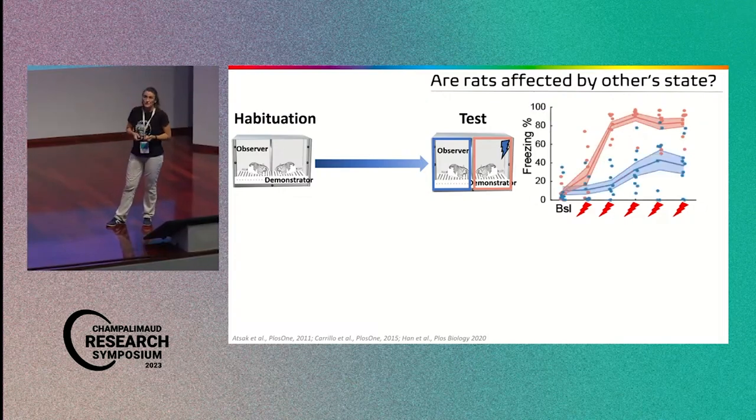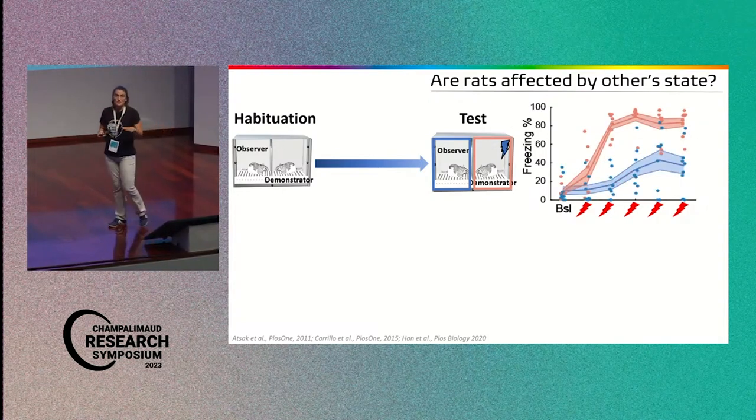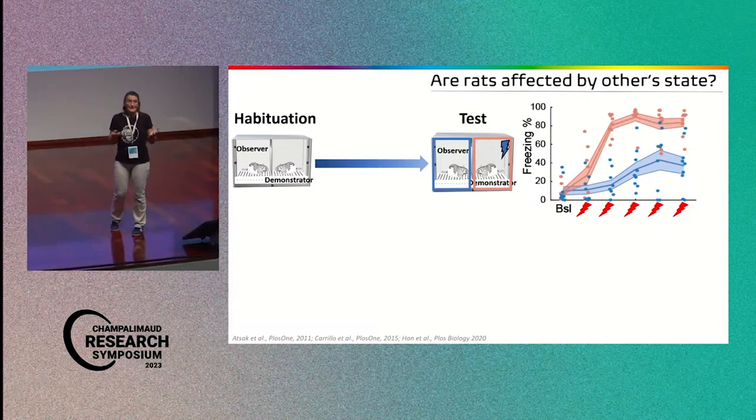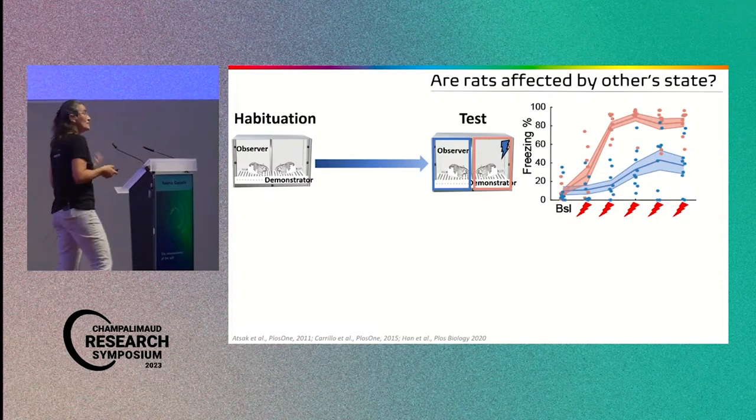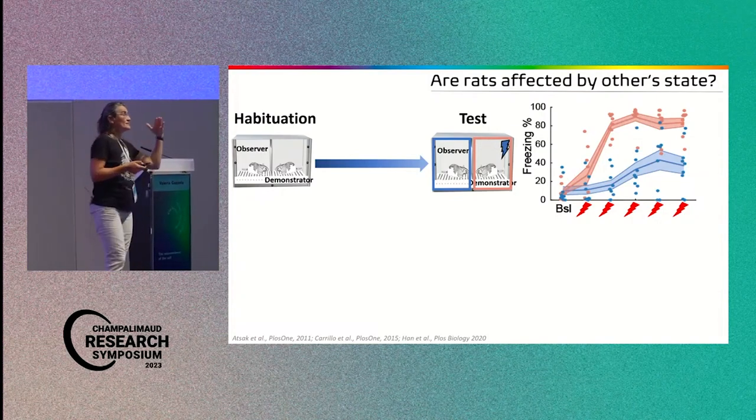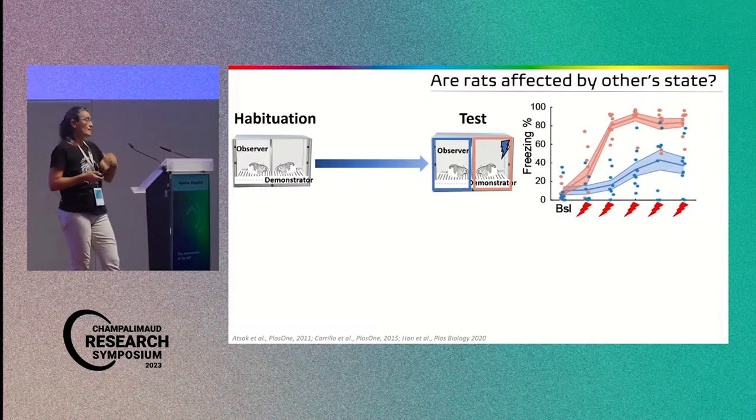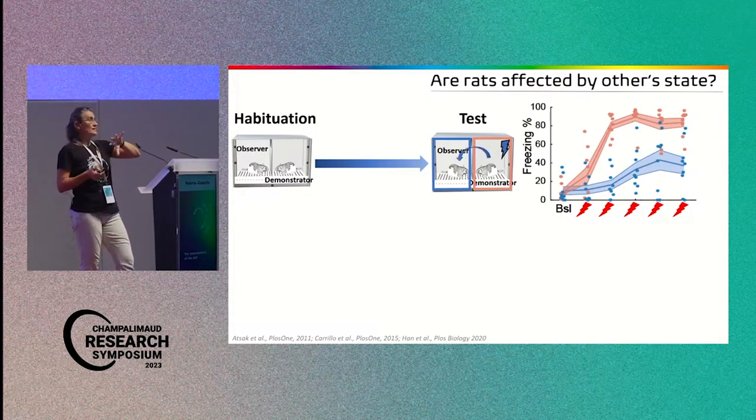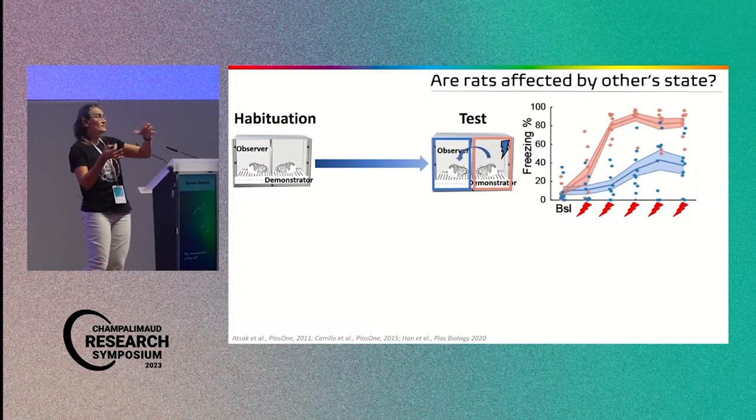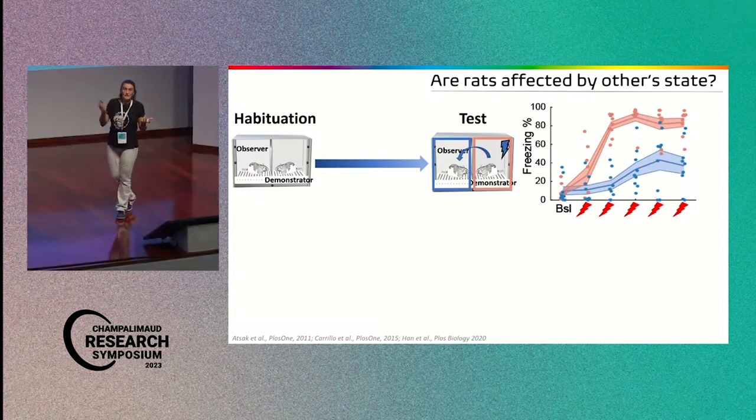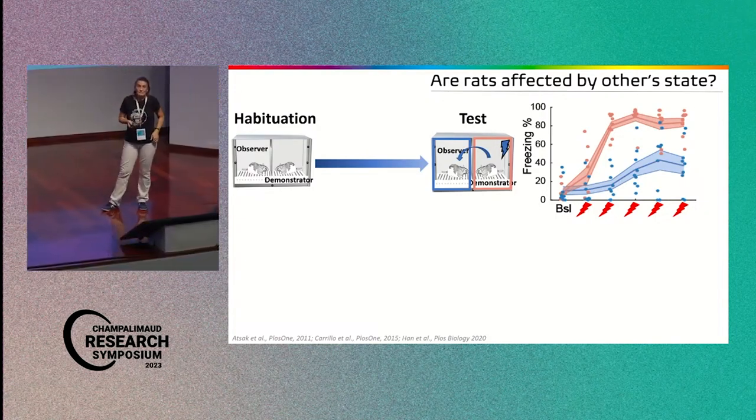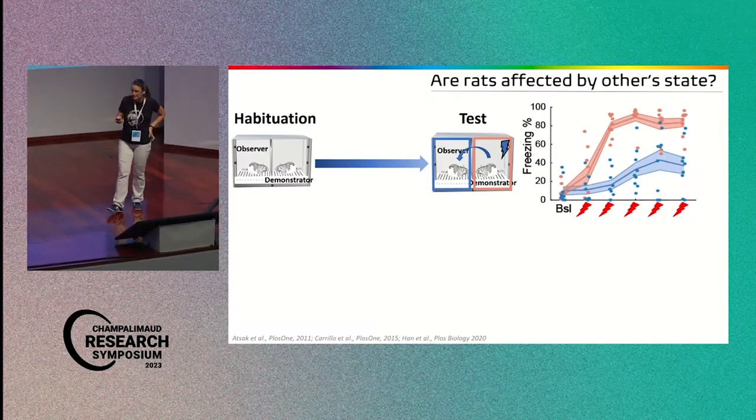But now the interesting thing is to try to see what happens to the observer. And if we measure freezing in the observer, despite the observer not experiencing anything, any bad things or any shock, you see that after a while it does increase the freezing as well. So there is somehow the emotional state of the demonstrator is transferred and perceived by the observer. Otherwise there would be no, why would the observer freeze?